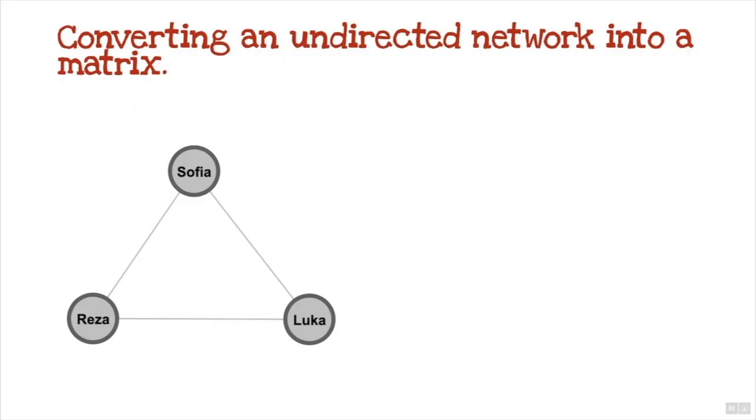Converting an undirected network into a matrix - here's the example in Gephi that we looked at earlier on. This is the matrix that it's going to end up as. From Reza, you've got a diagonal which is going to be zero. From Reza to Sofia we've got one connection, and from Reza to Luka we've got another connection. Sofia's got one connection to Luka and one connection to Reza. That's the matrix that will be used.